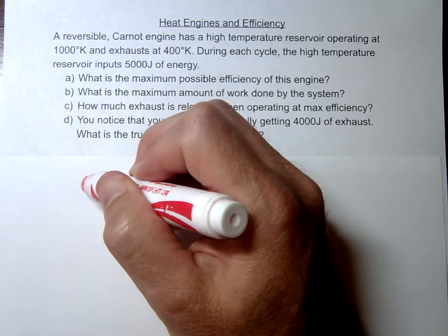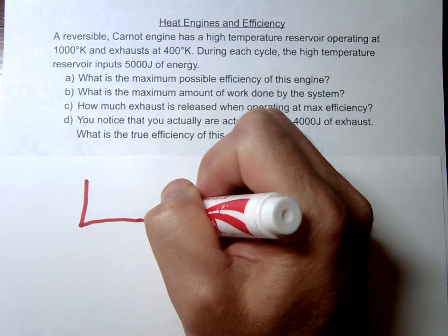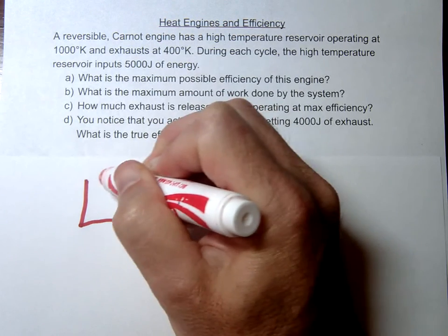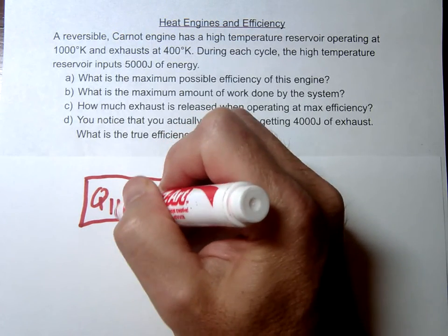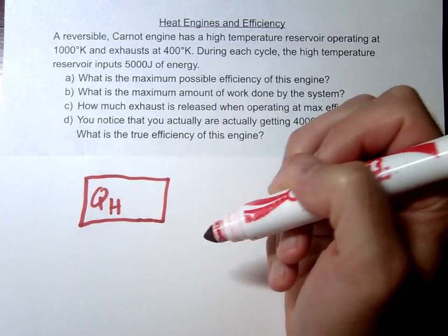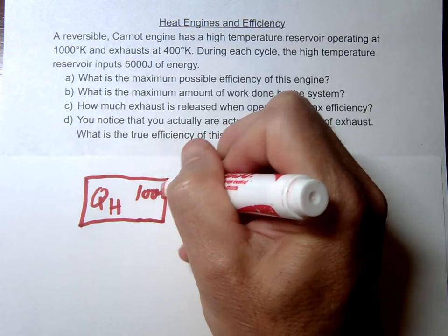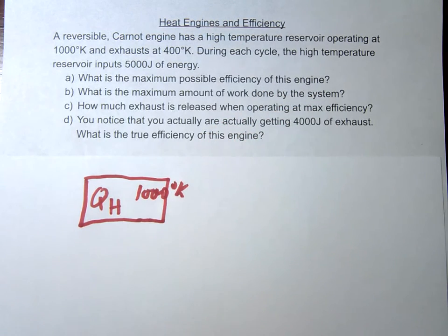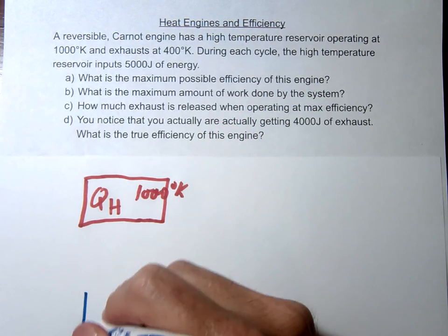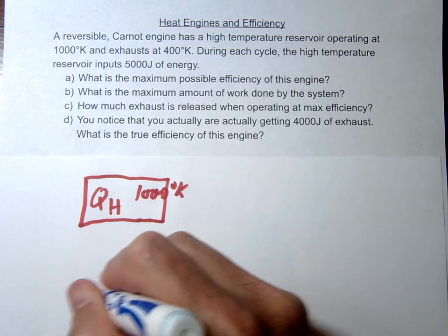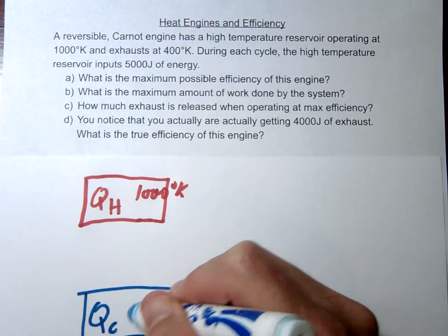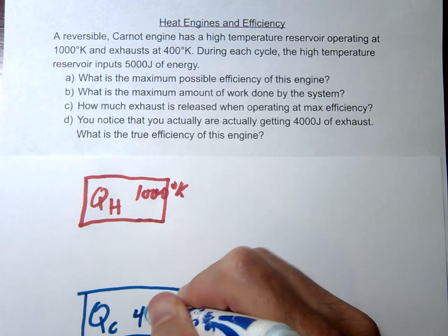So the way I like to model the engine is just to say we have our hot reservoir here, QH, and in this case it gives you the temperature, this is going to be 1000 degrees Kelvin. Then we have our cool temperature over here, call that QC, and this one in this problem is 400 degrees Kelvin.